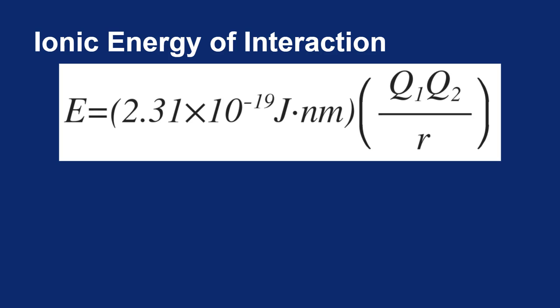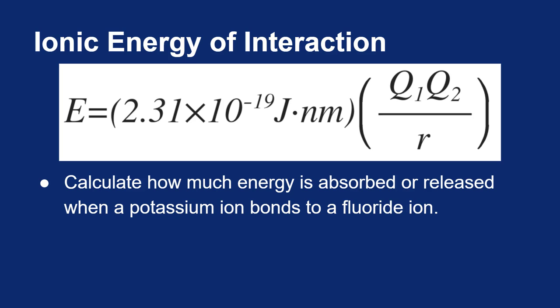Let's talk about how much energy is involved in one of these ionic bonds. Let's find out how much energy is absorbed or released when a potassium ion bonds to a fluoride ion. Now, there's one piece of information we need to know. We need to know the distance. It turns out that the bond length in potassium fluoride is 2.26 angstroms.